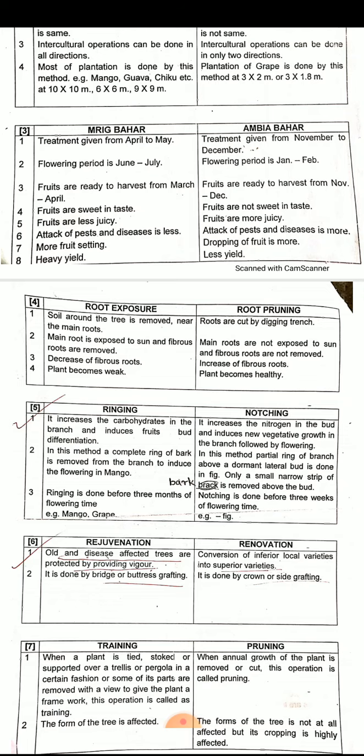In root exposure, the main root is exposed to the sun and fibrous roots are removed. In root pruning, the main root is not exposed to sunlight and fibrous roots are not removed.